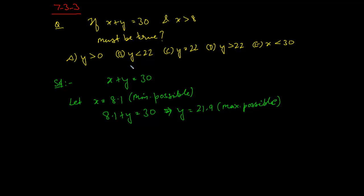Y always have to be more than 0? No. Y less than 22? Yes. If y can take a maximum value of 21.9, it can never be equal to 22, so it should always be less than 22. We get the answer. Okay, very nice, right? So it was a simple question.